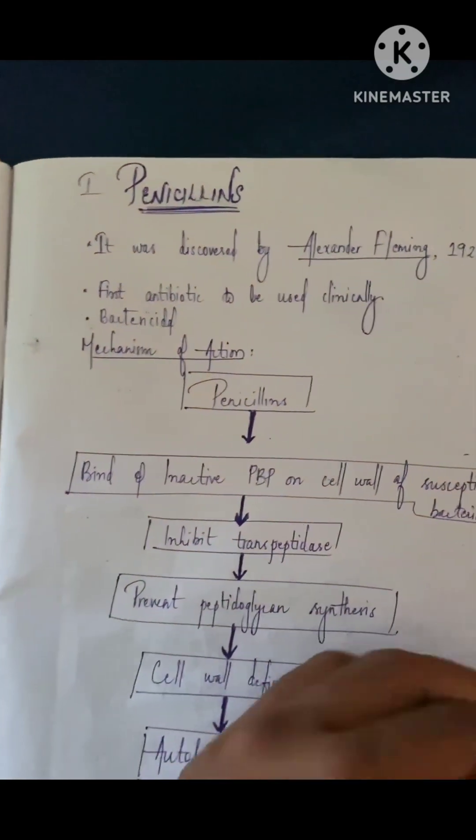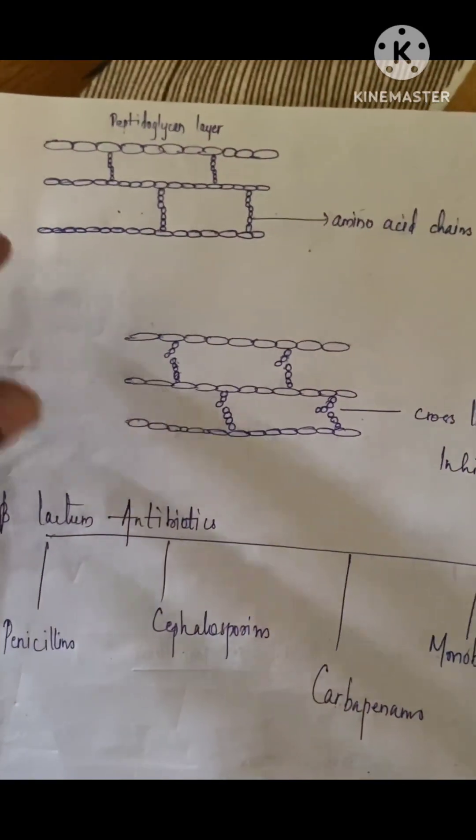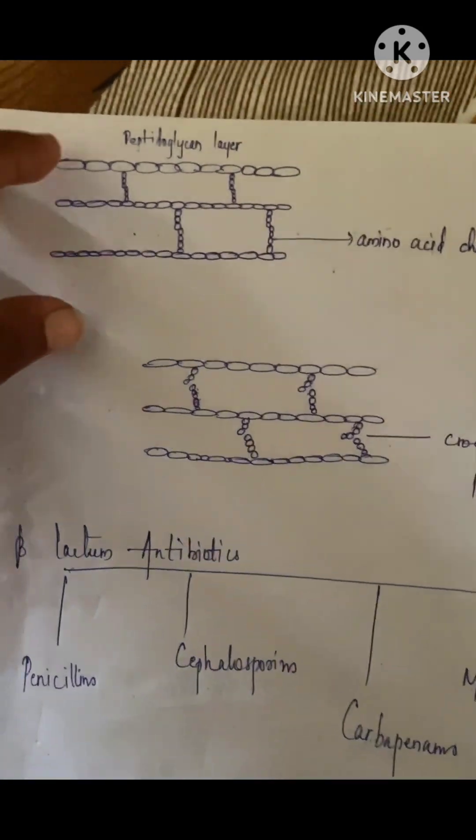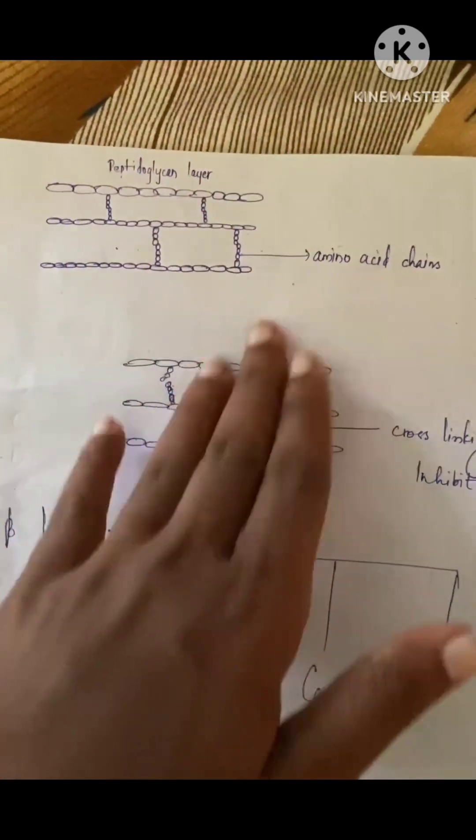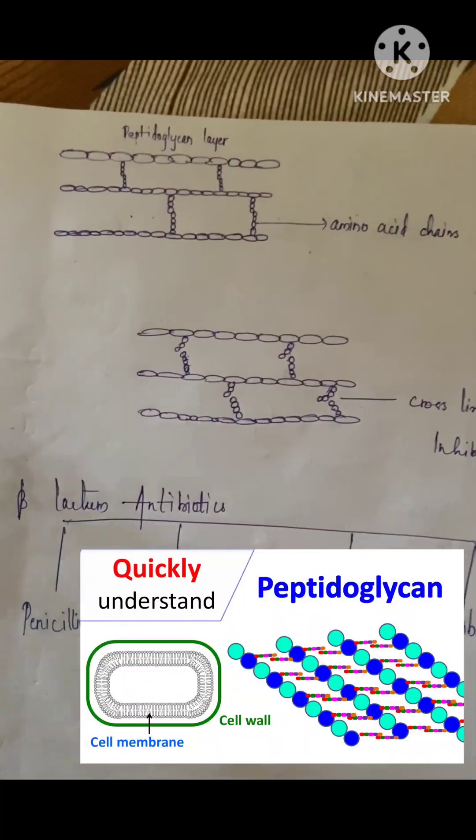In order to understand the mechanism of action, I've drawn a diagram. I'm not very good at drawing but for you guys I drew something. This is the bacterial cell wall with its peptidoglycan layer.